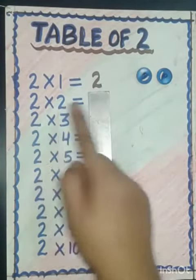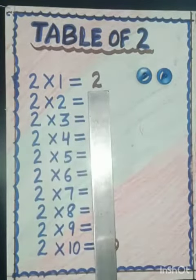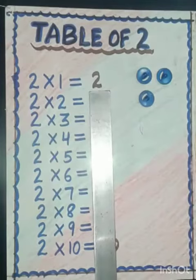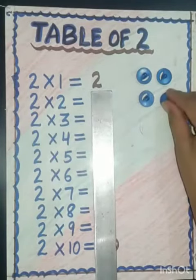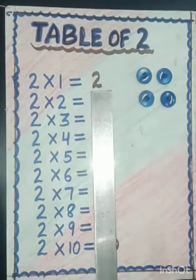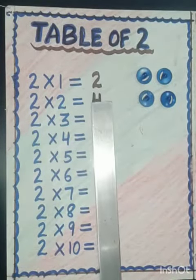Two twos are — we will add again two. So let's count: one, two, three, four. So two twos are four.